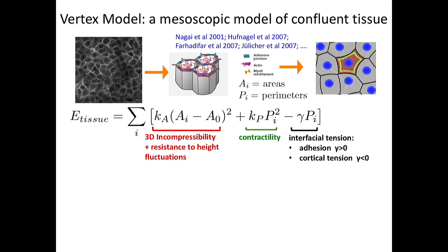There is a well-known model in developmental biology called the vertex model—a mesoscopic model of a confluent tissue. Viewed from the top, the tissue looks like a foam: the white outlines are cell boundaries. We make a completely two-dimensional model where the cell monolayer is a bunch of polygons covering the plane—a tessellation of the plane with polygons. The degrees of freedom in my model are the area and perimeters of the polygons. Each polygon is a cell.